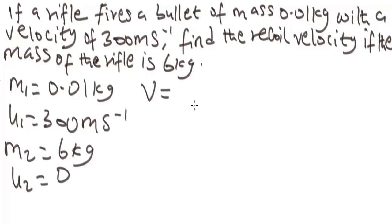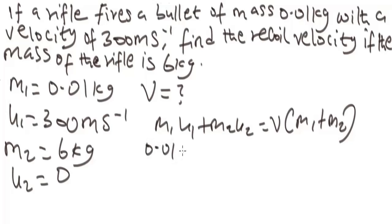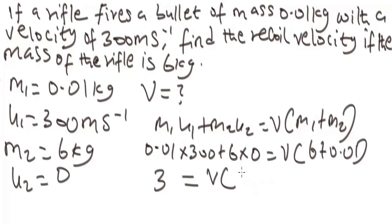This is under perfectly inelastic collision — as I told you, most collision questions come from this condition. We apply M1U1 plus M2U2 equals V in bracket M1 plus M2. Substituting: 0.01 times 300, plus 6 times 0, equals V in brackets 6 plus 0.01. Simplifying: 0.01 times 300 gives 3, and 6 times 0 is 0. So we have 3 equals V times 6.01.